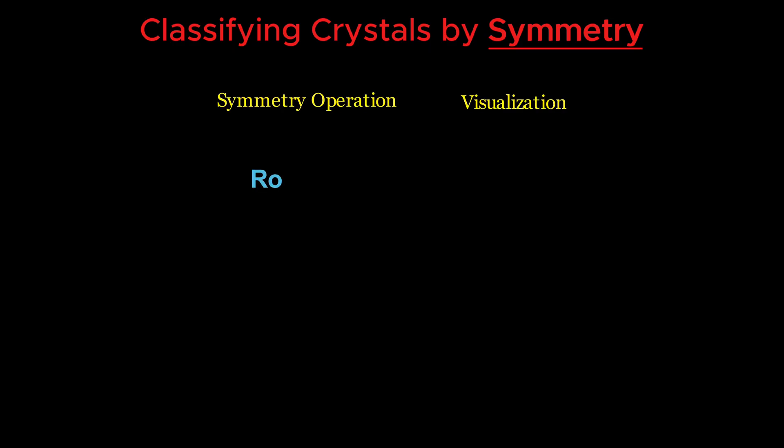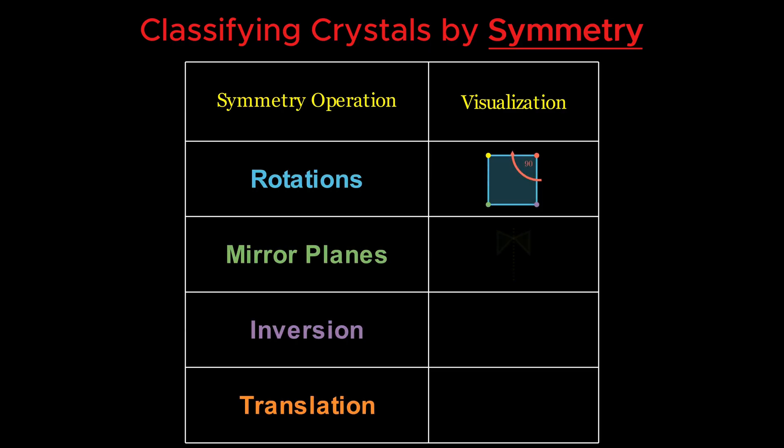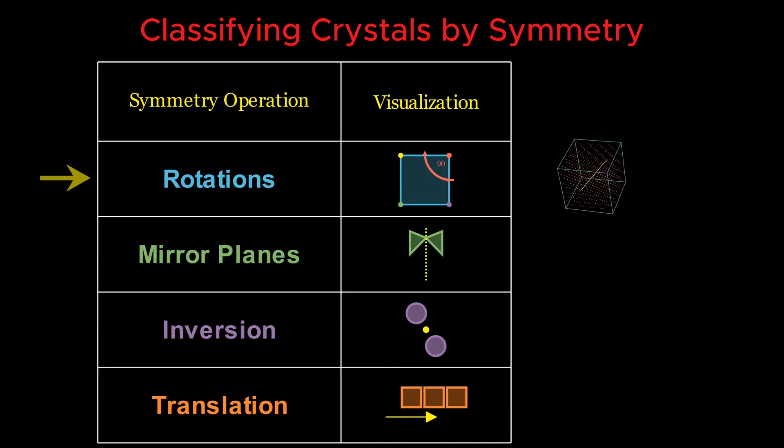Physicists classify crystals according to the symmetry operations that leave the crystal unchanged. These include rotations, mirror planes, inversion symmetry, translational symmetry. Let's look at some of the symmetries of the four crystal types we've discussed.